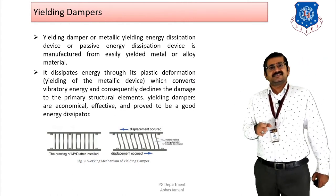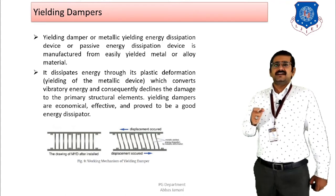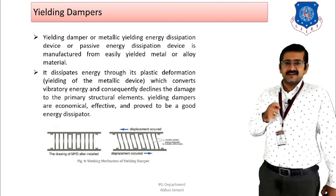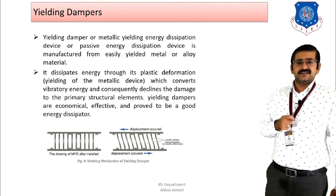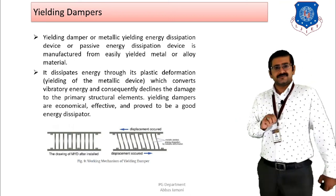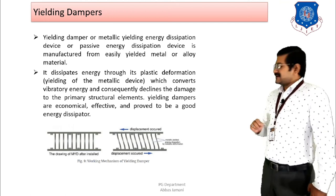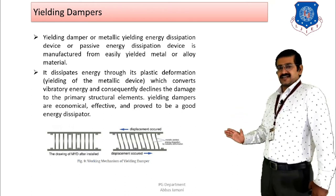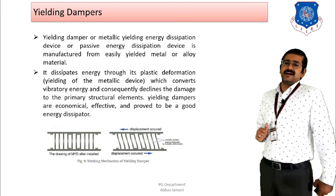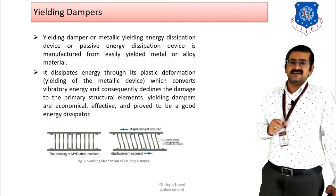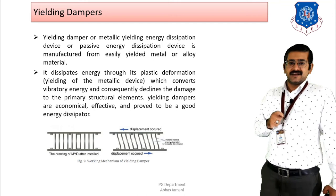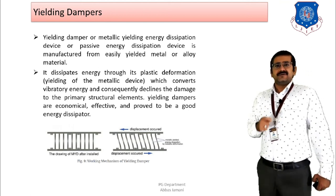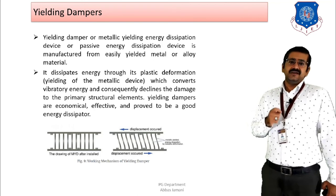Next is the yielding damper, which utilizes the yielding of metals to dissipate energy. The metallic yielding energy dissipation device is manufactured from yielded metals or alloy material. Two figures are shown: the first where yielding has not taken place, and the second after the earthquake force has been transferred and dissipation has occurred, showing the yielded metal. Energy is dissipated through plastic deformation of the metallic device, which converts vibration energy and reduces damage to primary structural elements.